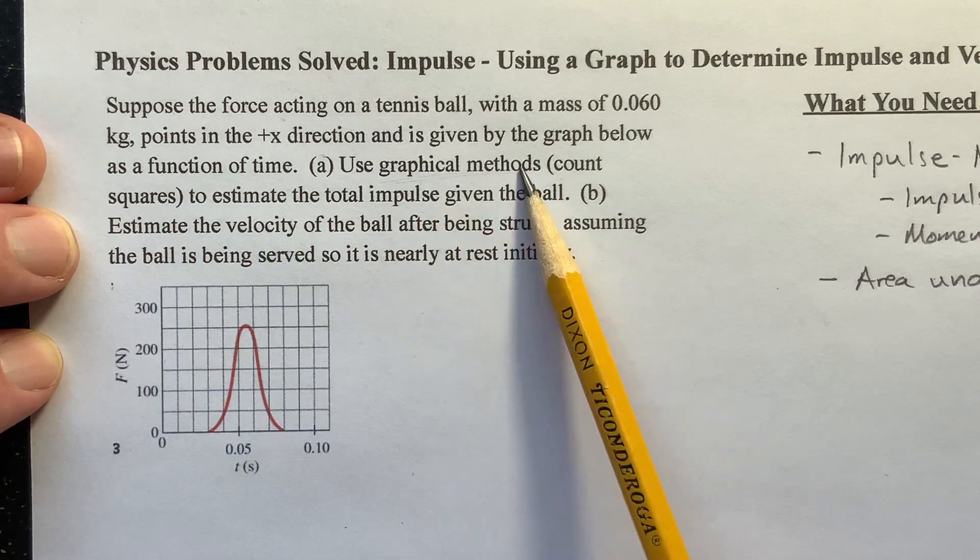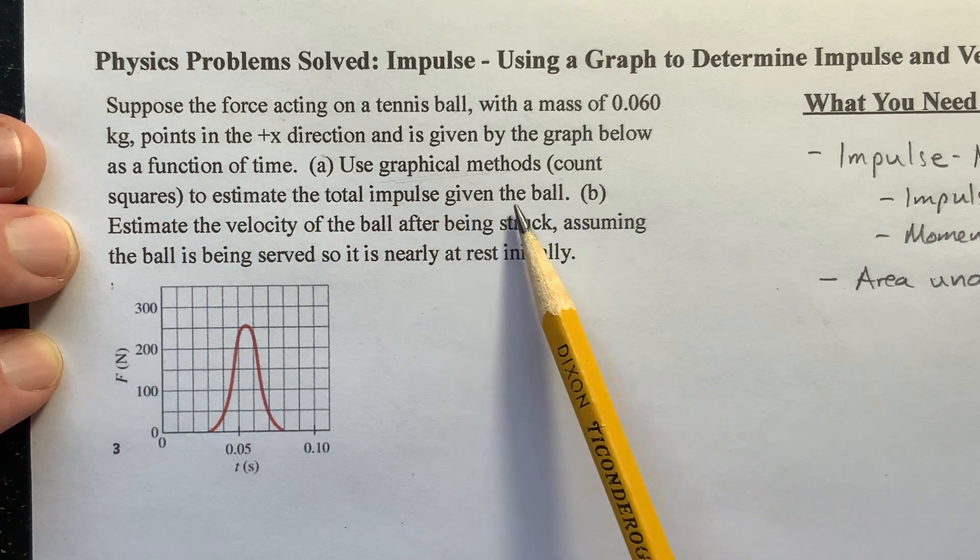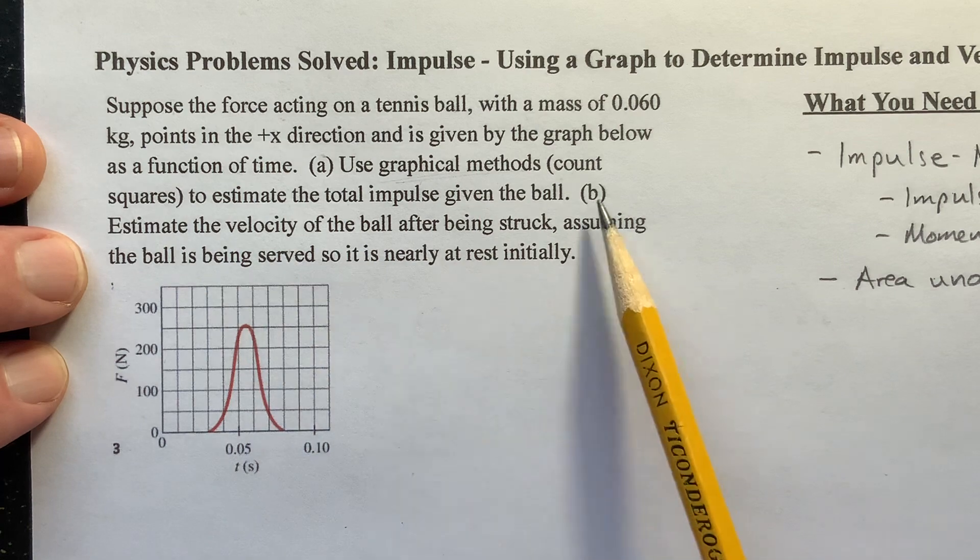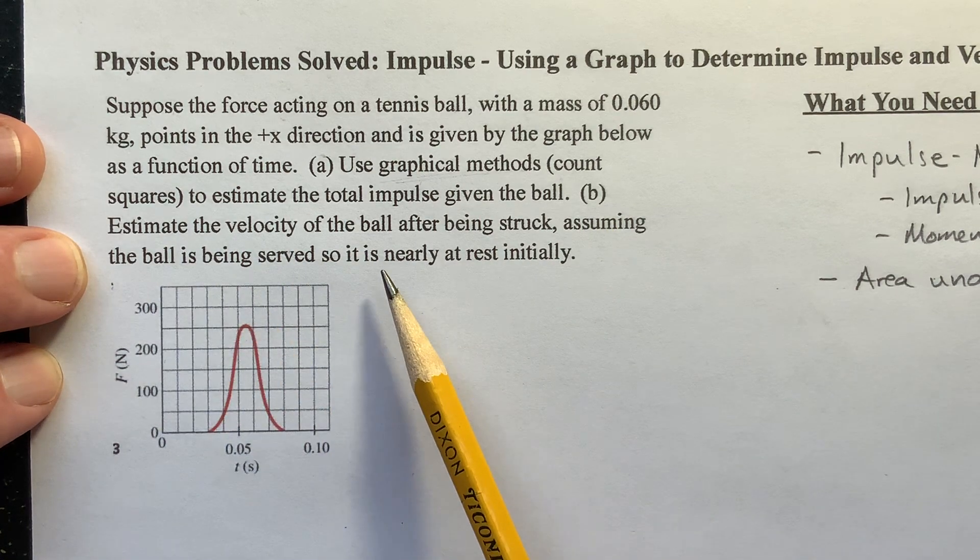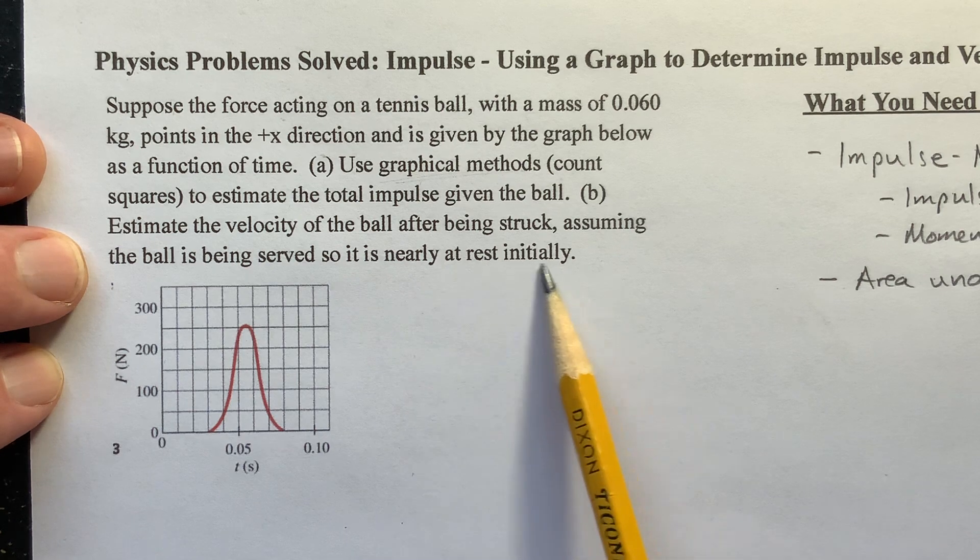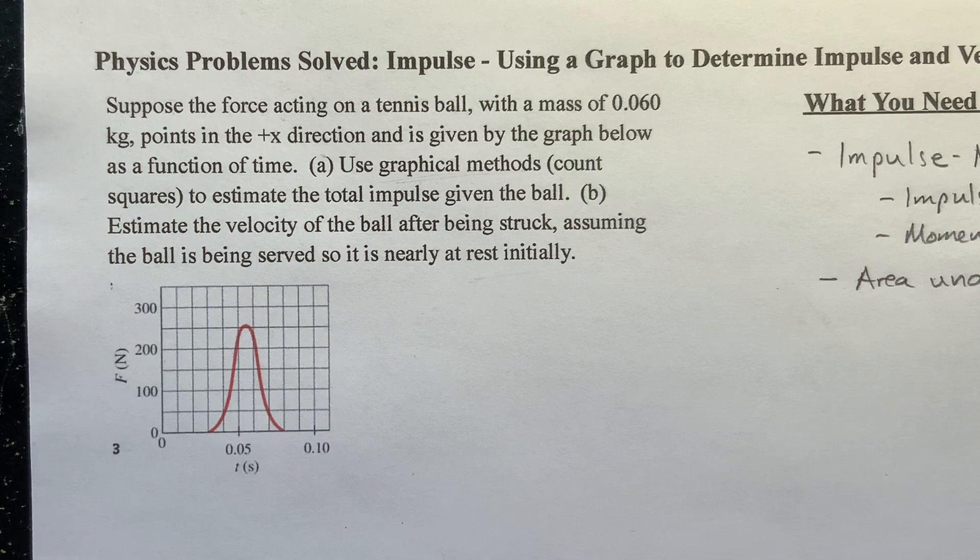Use graphical methods, counting squares, to estimate the total impulse given the ball. And then b, estimate the velocity of the ball after being struck, assuming the ball is being served, so it's nearly at rest initially. So the initial velocity of the ball is 0.